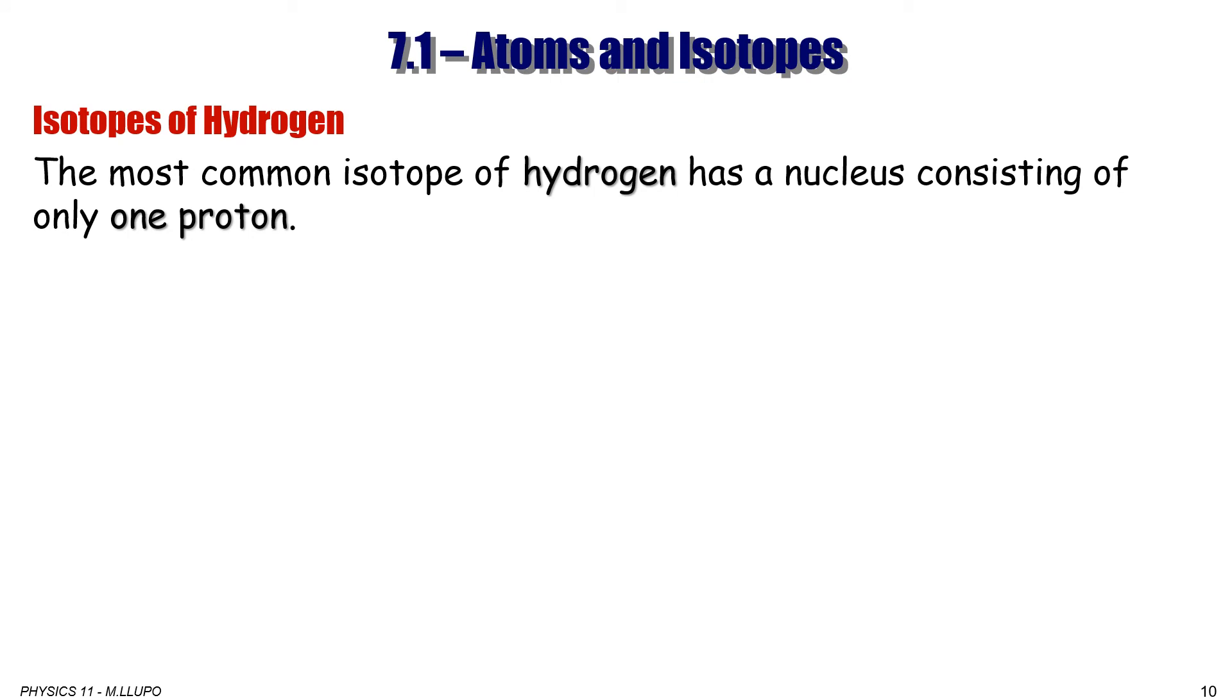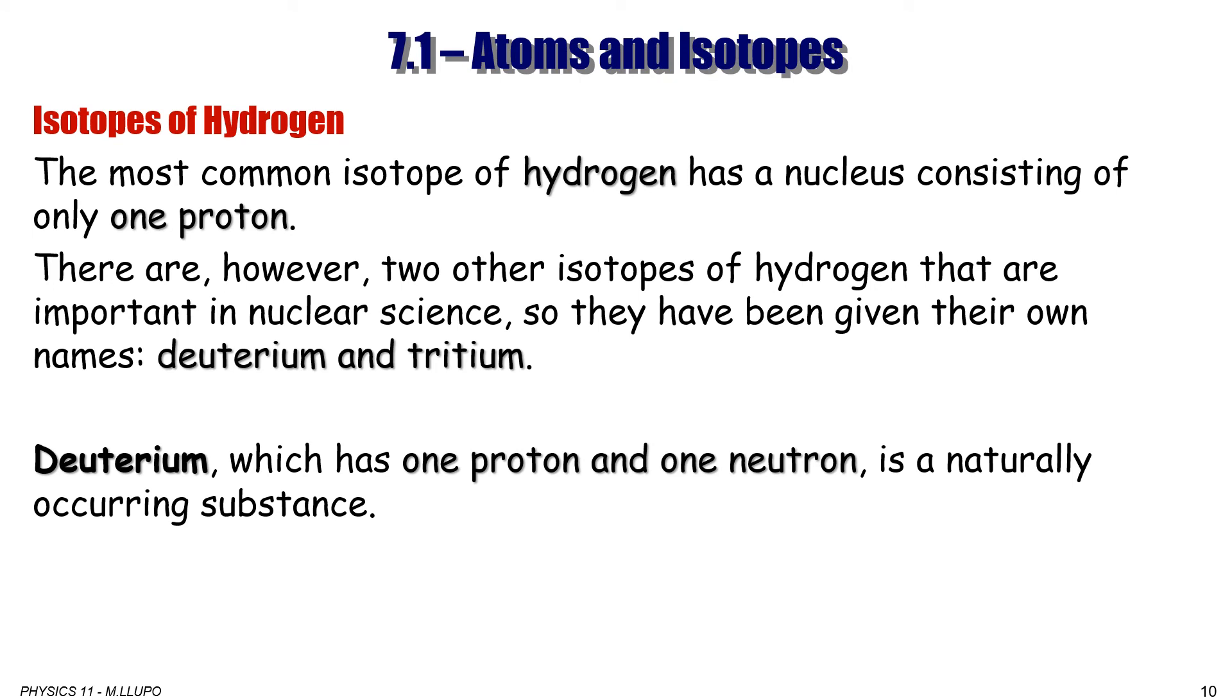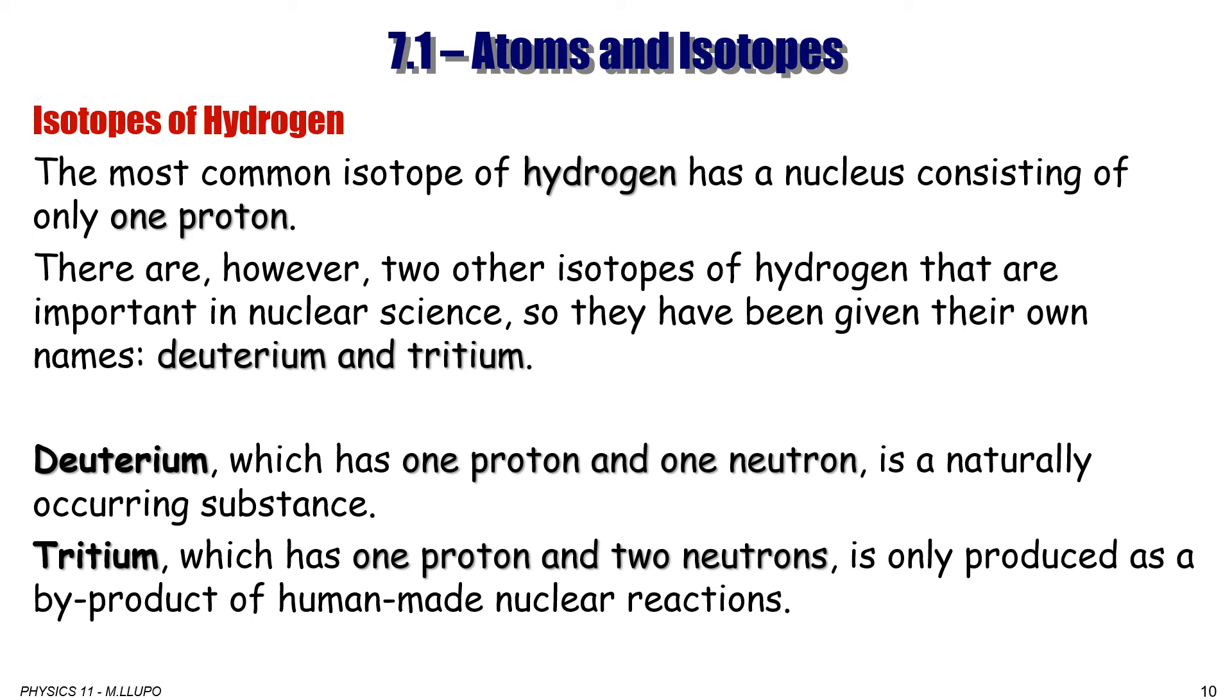The most common isotope of hydrogen that occurs naturally has a nucleus consisting of only one proton and that is mass one. There are, however, two other isotopes of hydrogen that are important in the nuclear science, so they have their own names, deuterium and tritium. Deuterium, which has one proton and one neutron, is naturally occurring substance. So mass is two. Tritium, which has one proton and two neutrons, so mass is three. It is only produced as a byproduct of the human-made nuclear reactions.